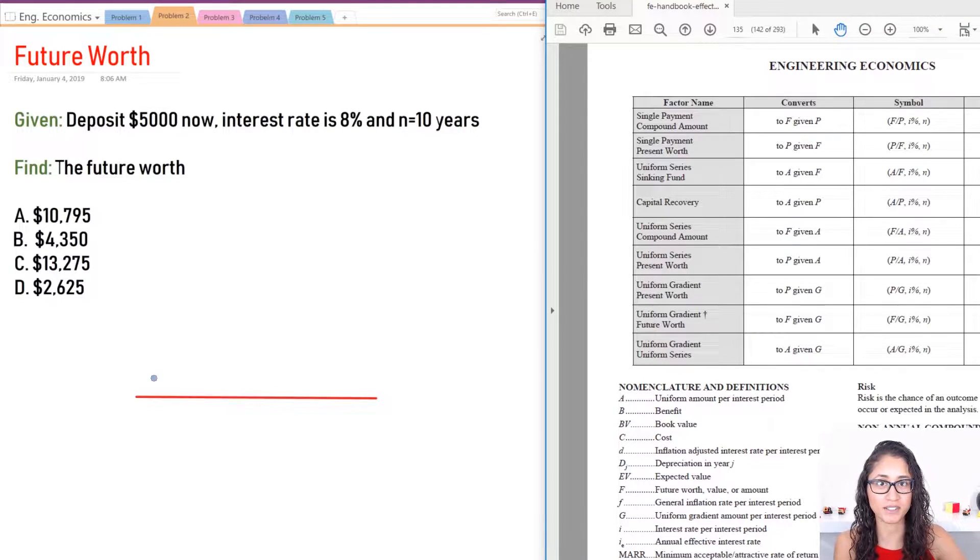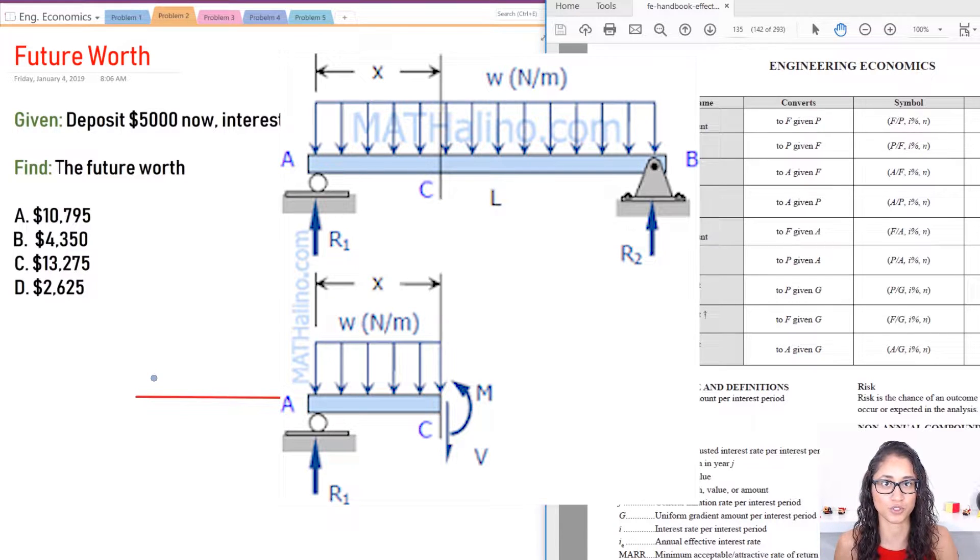So the question says if you deposit $5,000 today with an interest rate of 8%, we want to know what is the value of that $5,000 that you would deposit today in 10 years. So when you see these type of problems the first thing you should do is the cash flow diagram. If you haven't heard of that yet, don't worry we're going to go over it here. The cash flow diagram is pretty much like free body diagrams in statics and strength of materials.